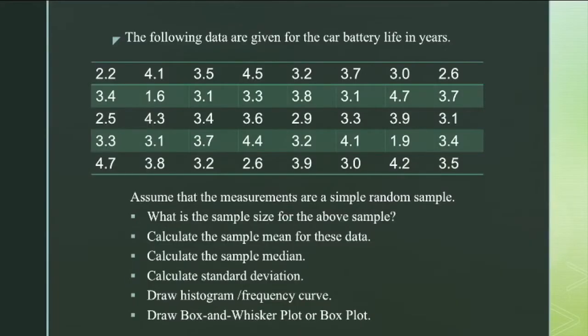These are two basic characteristics of the data which we want to discuss in this lecture. Now look at this data. 40 batteries were recorded for their lives which are listed here: 2.2 years, 4.1 years, 3.5 years and so on up to 4.2 and 3.5 years. The question is how can we represent this data? What can we infer from the data? What values can be the characteristics or the basic representative of the data?